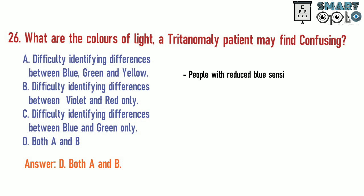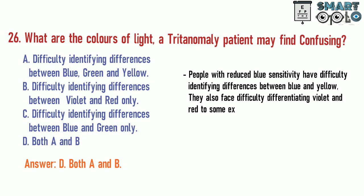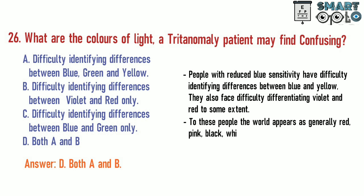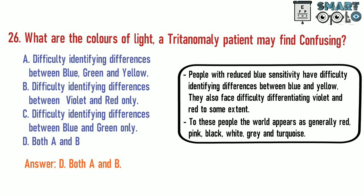People with reduced blue sensitivity have difficulty identifying differences between blue and yellow. They also face difficulty differentiating violet and red to some extent. To these people, the world appears as generally red, pink, black, white, grey, and turquoise.